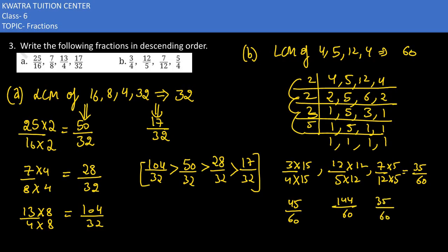Last I have is 5 by 4. 4 will make 60, so this must be multiplied with 15. So I would have in the last 75 by 60. Now we arrange in the descending order: 144 over 60 would be there. This is greater than 75 by 60. This is greater than 45 by 60. This is greater than 35 by 60.